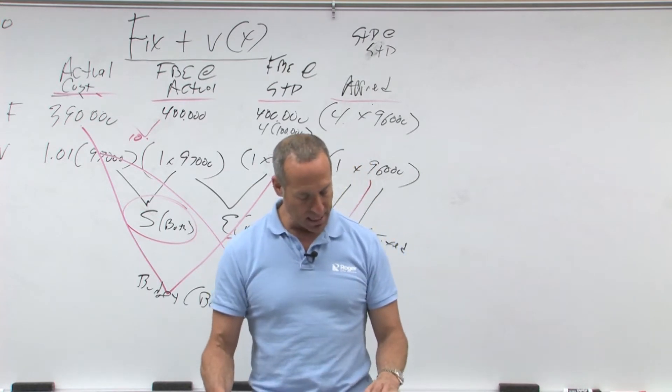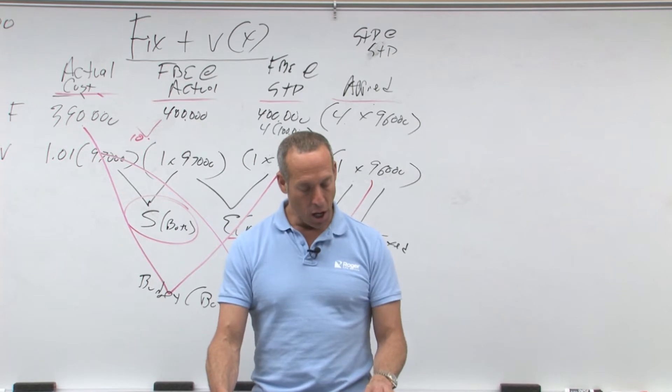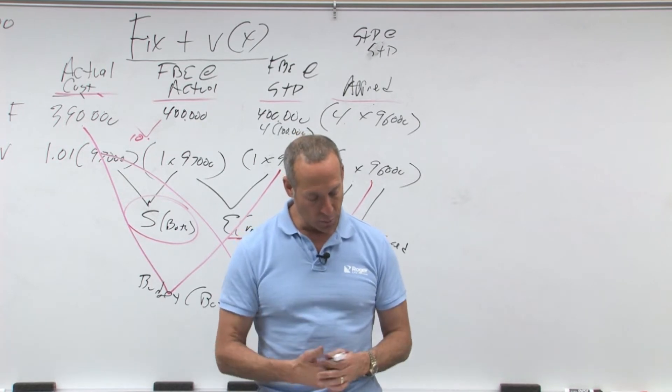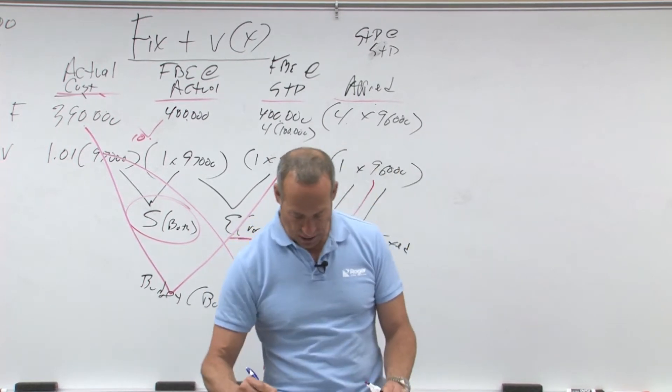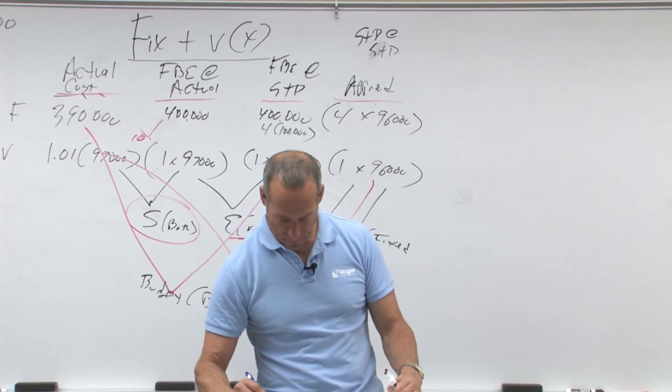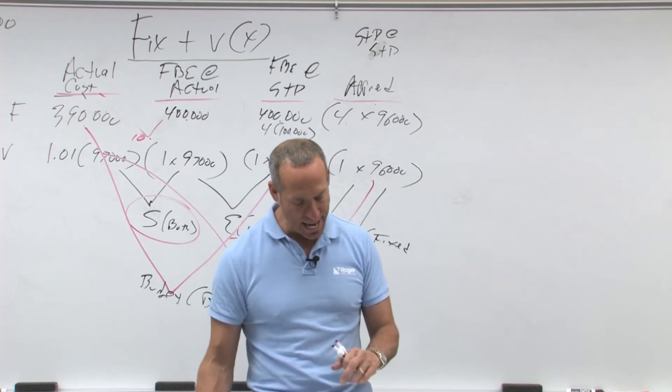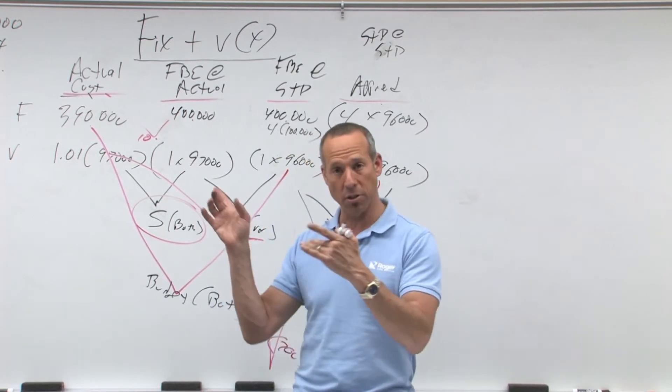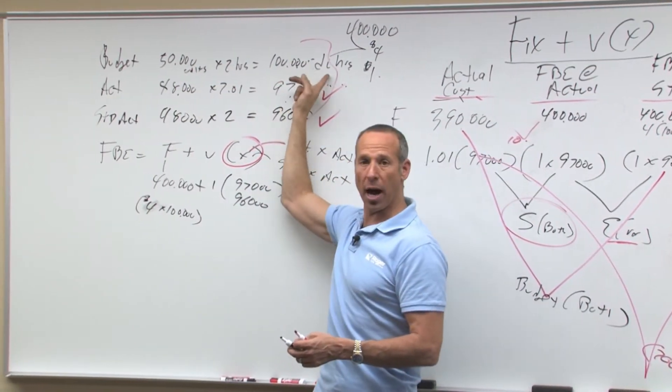The total of the base is estimated. For example, if the company expects to produce 50,000 units at two standard direct labor hours per unit, the estimate for the base is 100,000 hours. So that's 50,000 at two equals 100,000 direct labor hours.